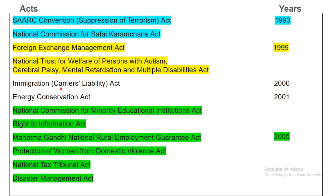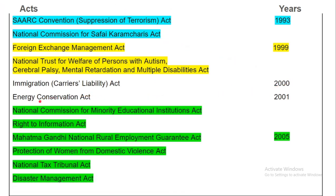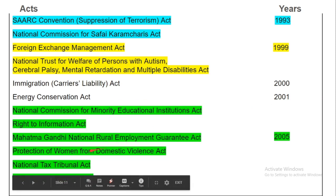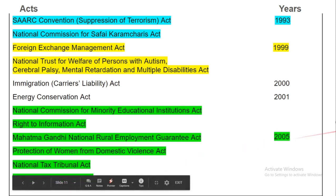Immigration Carriers Liabilities Act was passed in 2000. Energy Conservation Act was passed in 2001. National Commission for Minority Education Act, Right to Information Act, Mahatma Gandhi National Rural Employment Guarantee Act, Protection of Women from Domestic Violence Act, National Tax Tribunals Act and Disaster Management Act — these acts all passed in 2005.